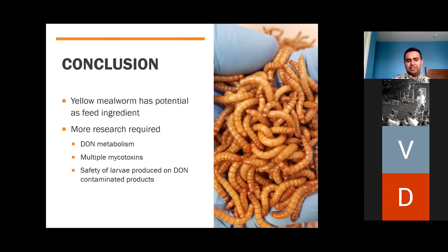Overall, I concluded that yellow mealworms have potential as a feed ingredient. However, the use of yellow mealworms produced on DON-contaminated feedstuffs still needs to be further researched. More research is required related to how mealworms metabolize DON, if they can handle multiple mycotoxins simultaneously — as co-occurrence of mycotoxins is quite common — and the safety of larvae produced on DON and other mycotoxin-contaminated products.